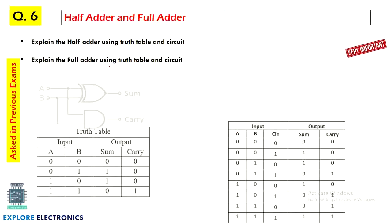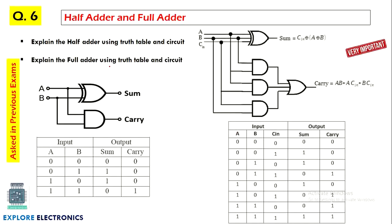Half adder and full adder are very familiar questions seen in many exam papers. We need to write the circuit for sum as well as carry, and also write the truth table for all possible input combinations. The sum and carry expressions are given; sum can also be written and implemented using basic gates. That can be the way we answer this question.